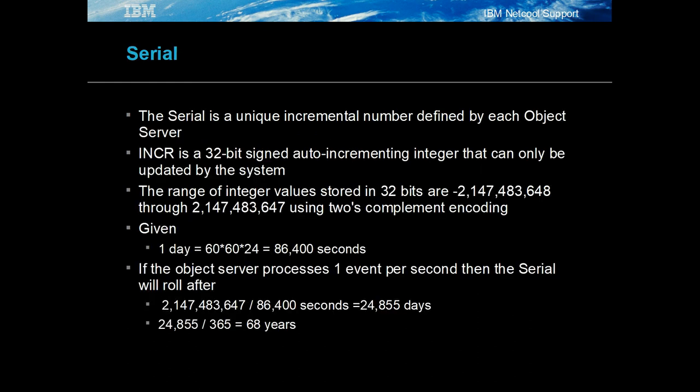The serial number is defined automatically by the object server. It is an auto-incrementing integer whose value increases to the maximum allowed for 32-bit integers. If the object server processes one event per second, it would take 68 years for an object server's serial to roll back to one.